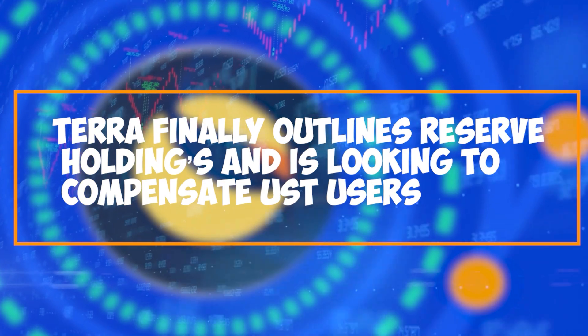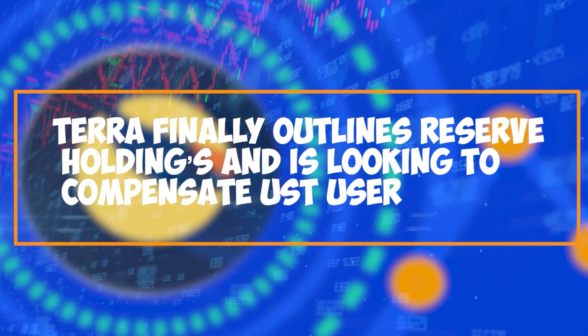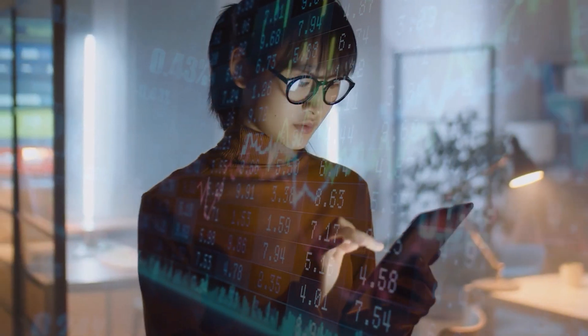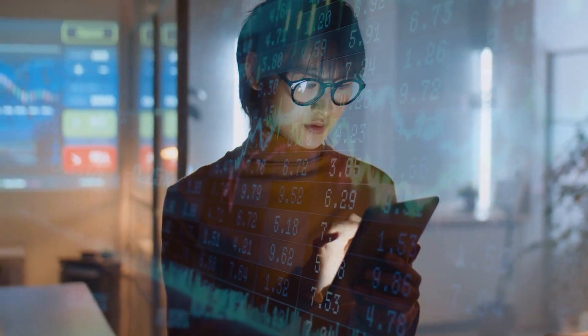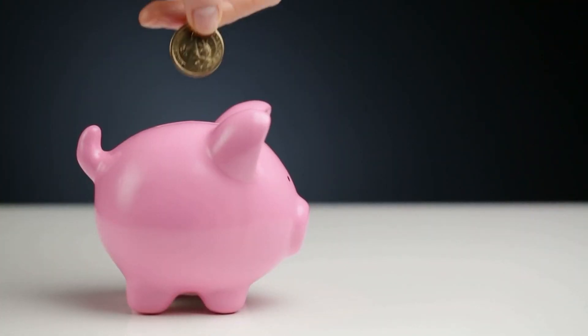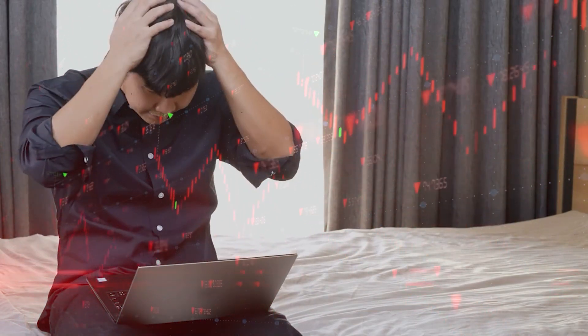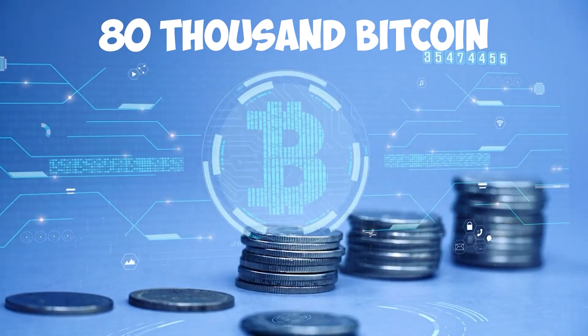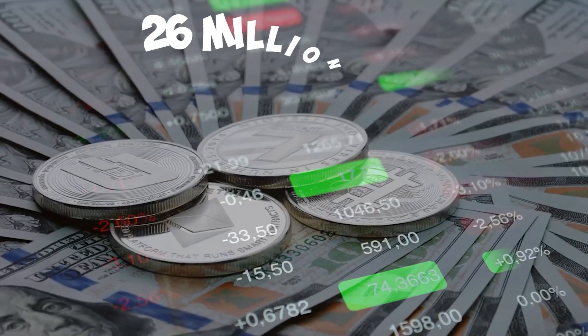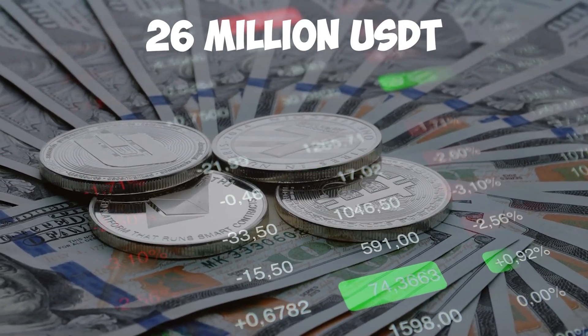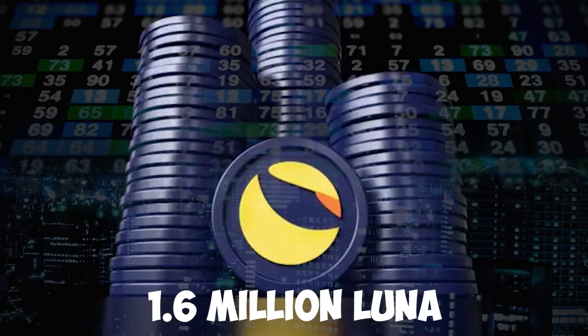Next, look at this news saying Terra finally outlines reserve holdings and is looking to compensate UST users. Apparently, they already used the reserves in the hopes of holding the value of Terra USD to the peg of $1. It was a big mistake to actually wait that long. Before, they had 80,000 Bitcoin, 39,000 BNB, around 26 million USDT, 69,000 UST, and 1.6 million Luna.